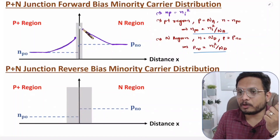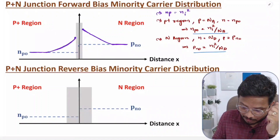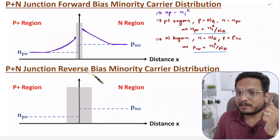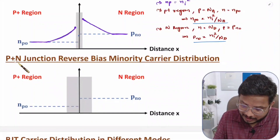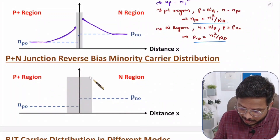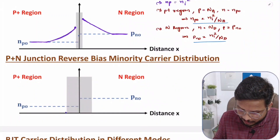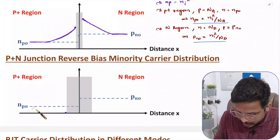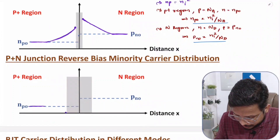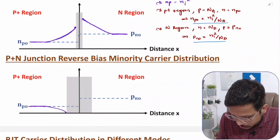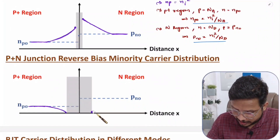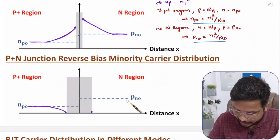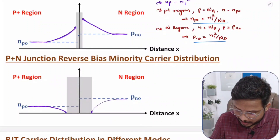So in forward bias, nearer to the junction, minority carrier concentration will increase. In reverse bias, nearer to the junction, minority carrier concentration will decrease. For a P-plus N junction in reverse bias, the depletion region is wide. The minority carrier concentration starts at its equilibrium value far from the junction, but as you approach the junction it decreases to a minimum near the depletion region.